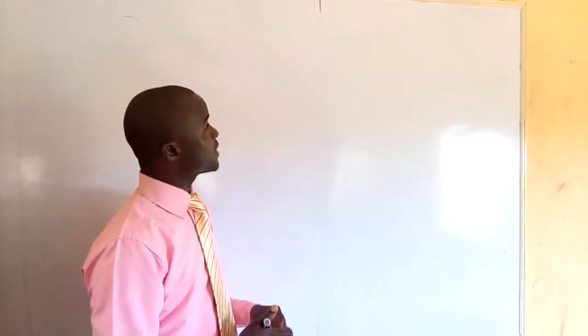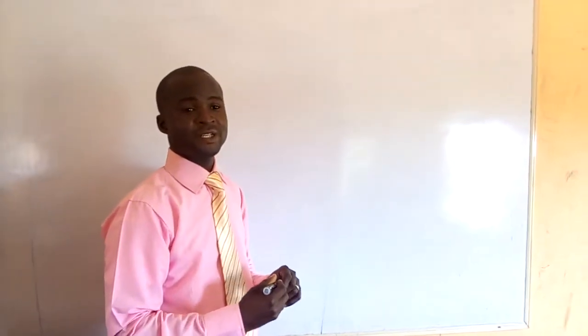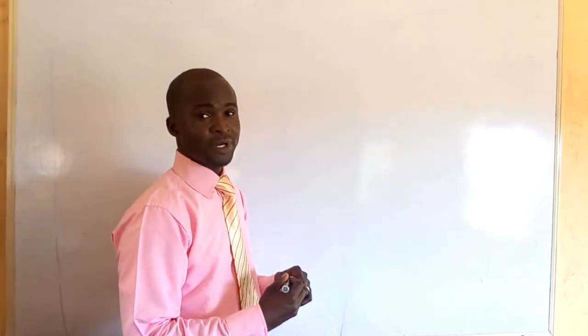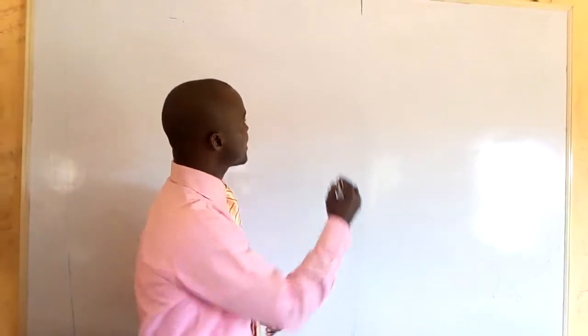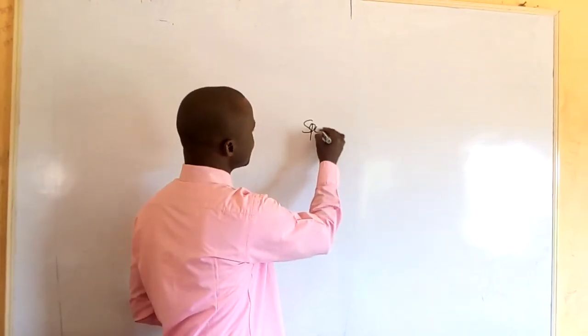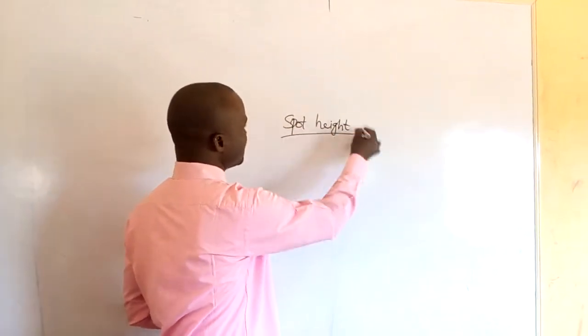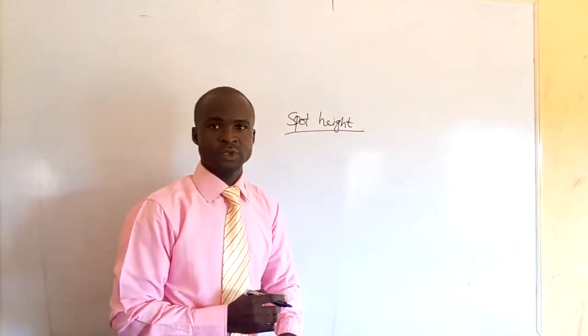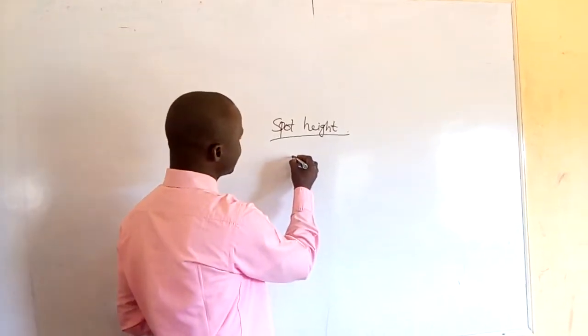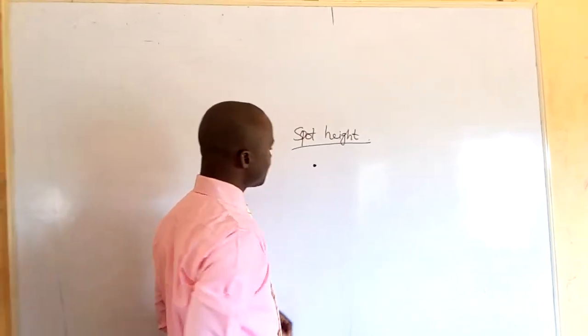Following us today, we want to look at another method of representing relief features on a topographic map. The next method we want to look at today has to do with spot height. This spot height has different meanings to different people. Spot height is always denoted like this on a topographic map.